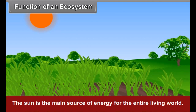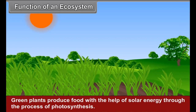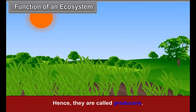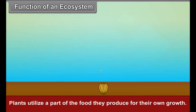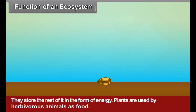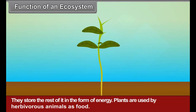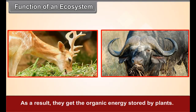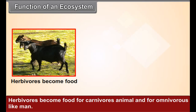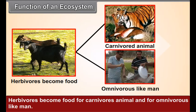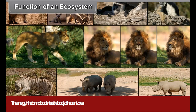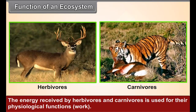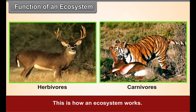Function of an Ecosystem: The sun is the main source of energy for the entire living world. Green plants produce food with the help of solar energy through the process of photosynthesis; hence, they are called producers. Plants utilize a part of the food they produce for their own growth and store the rest in the form of energy. Plants are used by herbivorous animals as food, allowing them to get the organic energy stored by plants. Herbivores become food for carnivorous animals and omnivores like man. The energy received by herbivores and carnivores is used for their physiological functions. This is how an ecosystem works.